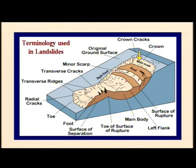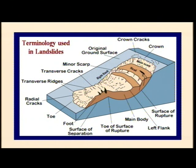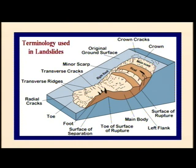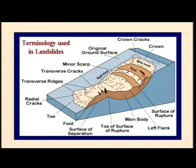The main scarp is a steep surface on the undisturbed ground at the upper edge of the landslide, caused by the movement of displaced material away from undisturbed ground. It is the visible part of the surface of rupture. A minor scarp is a steep slope on displaced material produced by differential movement within it. The surface of rupture forms the lower boundary of the displaced material below the original ground surface. Accumulation is the volume of displaced material that has fallen from the top and been accumulated on the ground surface. The toe is the lowest, usually curved margin of the displaced material, most distinct from the main scarp.